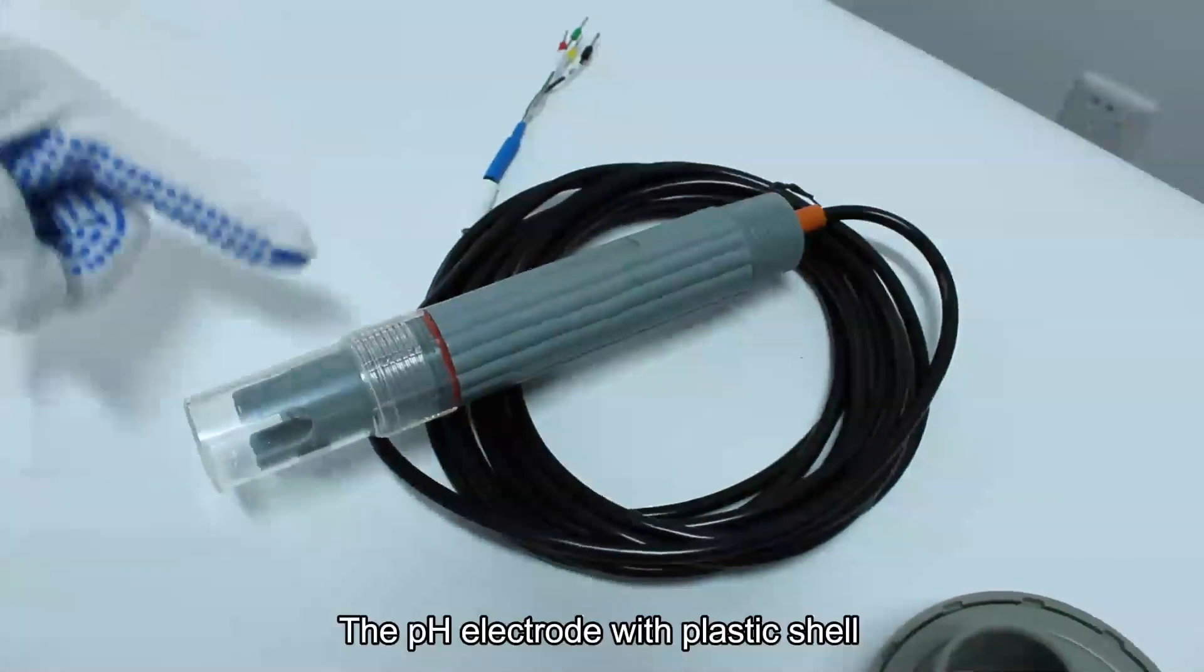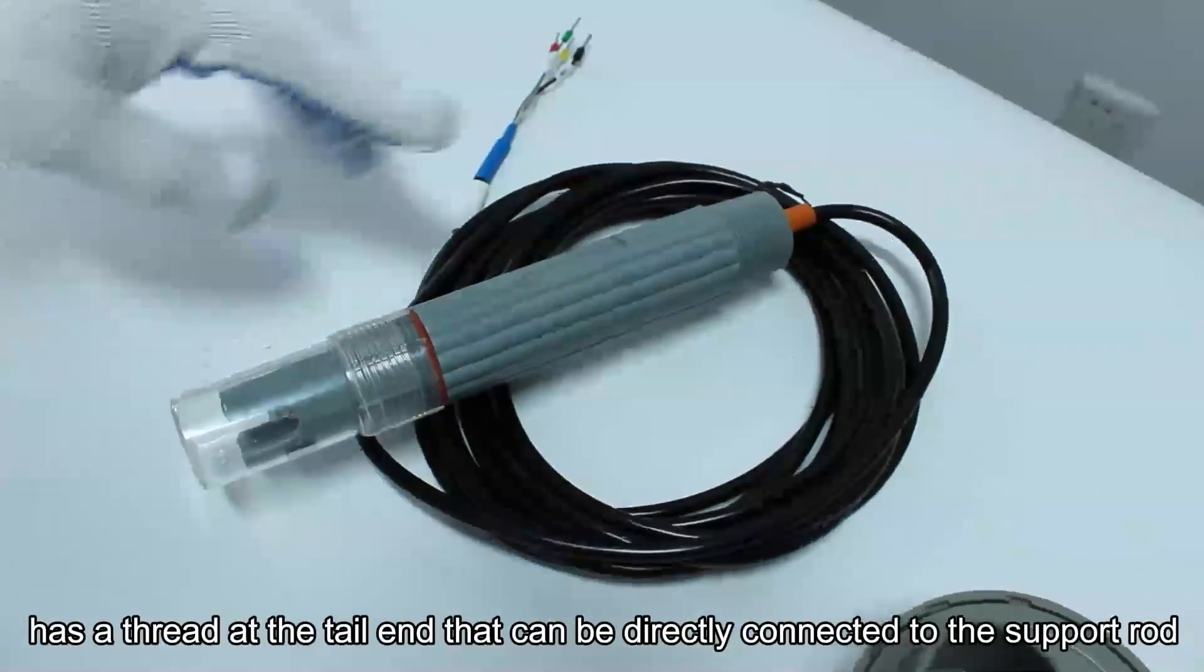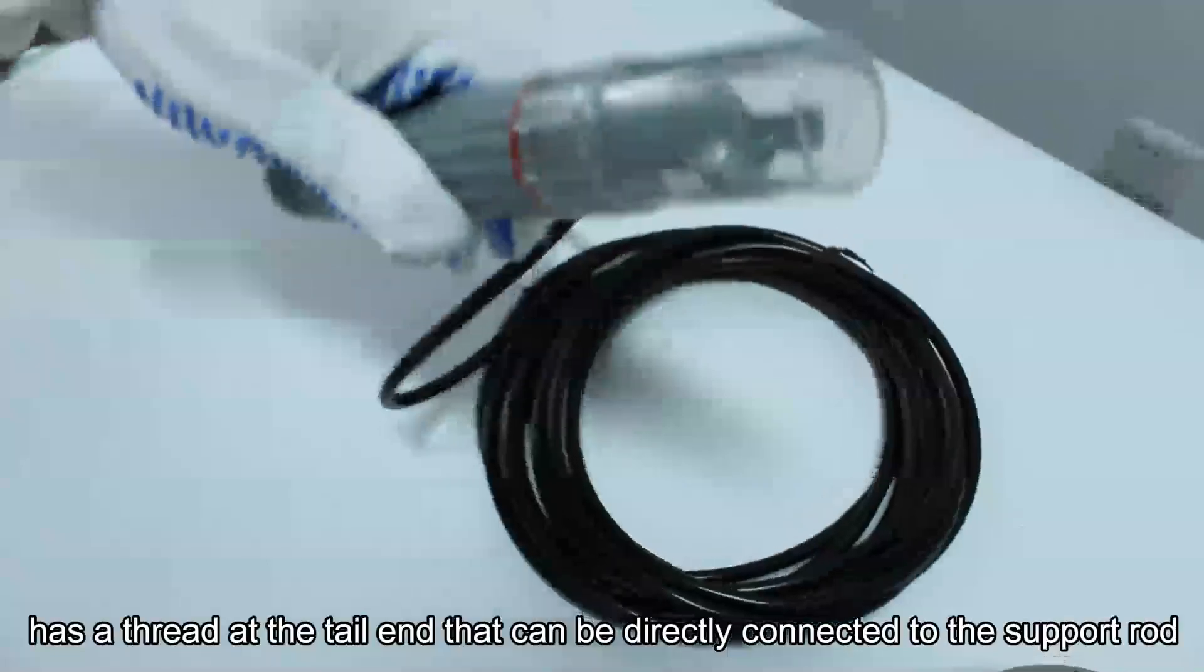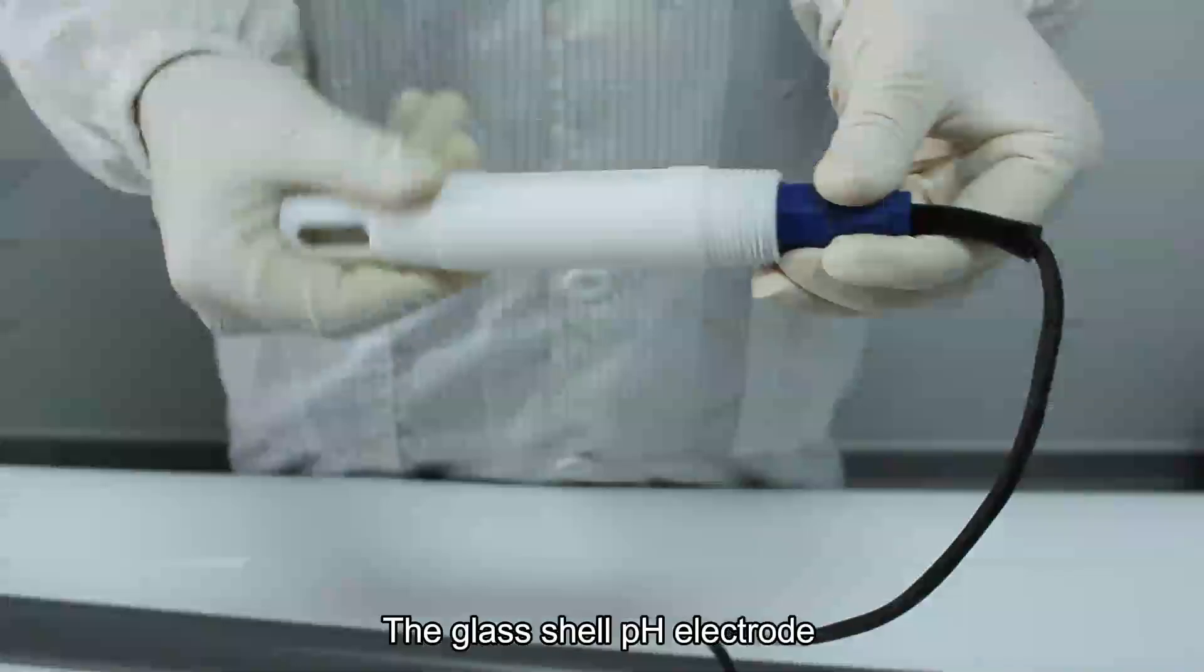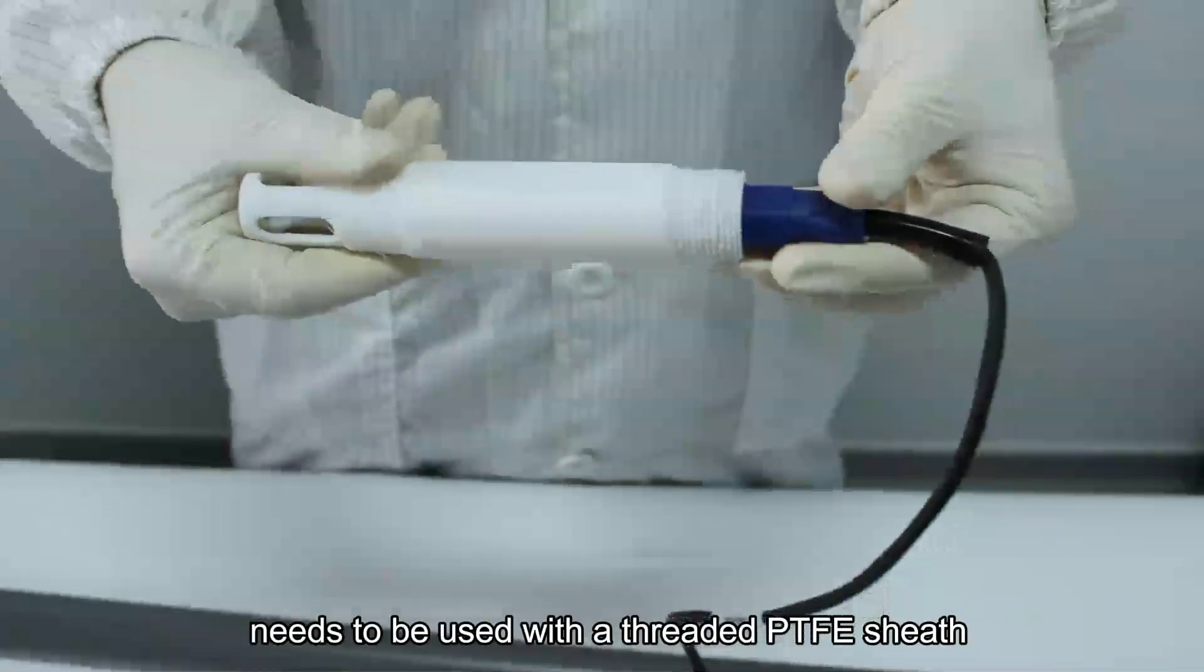The pH electrode with plastic shell has a thread at the tail end that can be directly connected to the support rod. The glass shell pH electrode needs to be used with a threaded PTFE sheet.